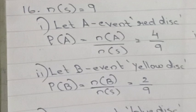Answer: n(S) = 9. 1. Let A be the event of drawing a red disc. P(A) = n(A)/n(S) = 4/9.